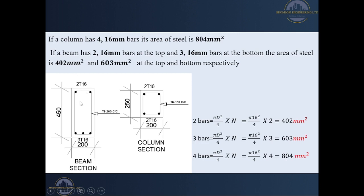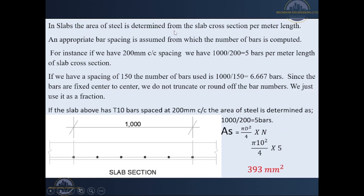In a beam, we have two 16 millimeter bars at the top and three 16 millimeter bars at the bottom. The formula is the same — it's only the number of bars and the diameter that you change. So it is π × d² / 4 × n, giving 603 mm² for the bottom bars and 402 mm² for the top bars. In slabs, the area of steel is normally determined from the slab cross-section per meter length, and an appropriate bar spacing is assumed from which the number of bars is computed.